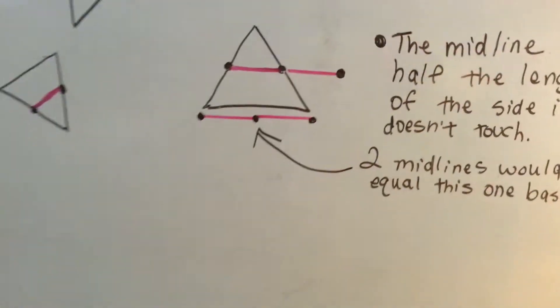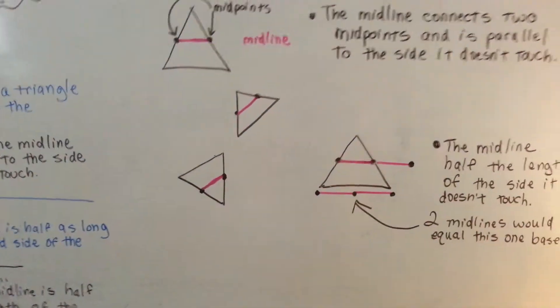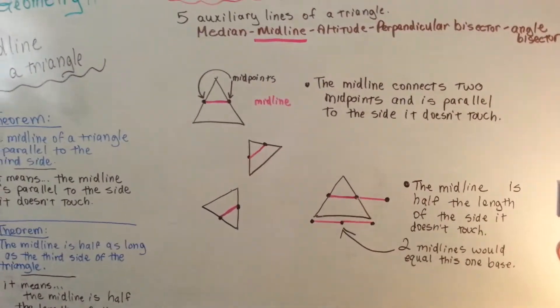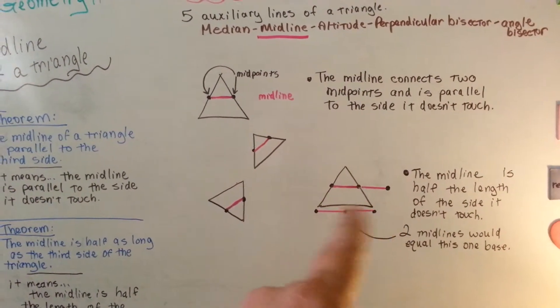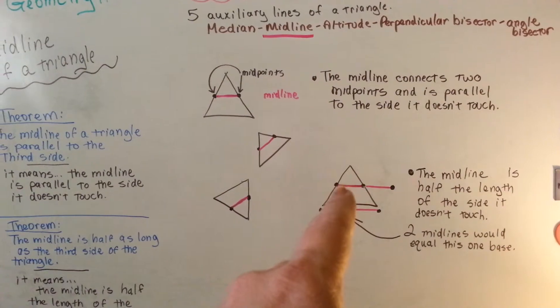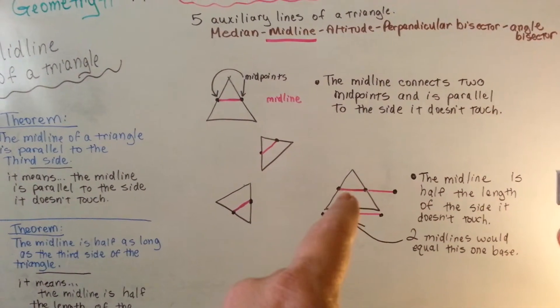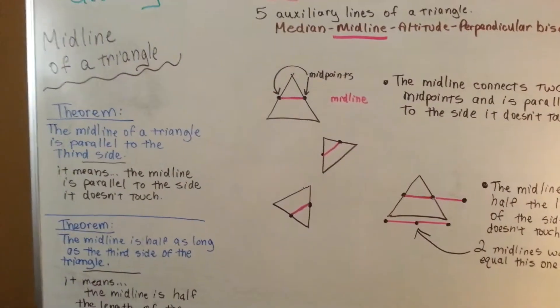And you're going to be able to use that in proofs in the future. If something says, how can you prove that this bottom line here is that long, you can say my proof is that it is twice the size of the midline. So that's going to come up.